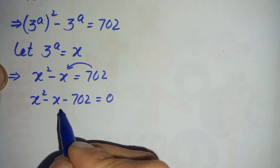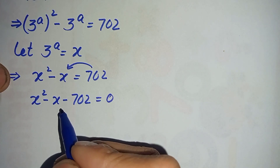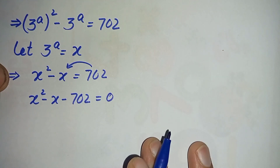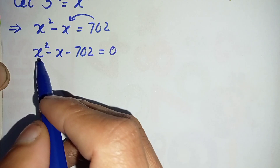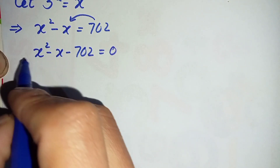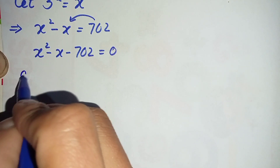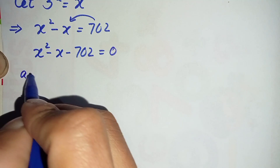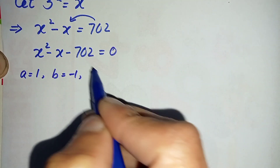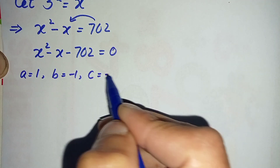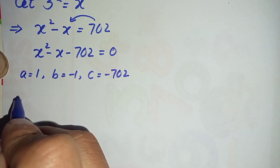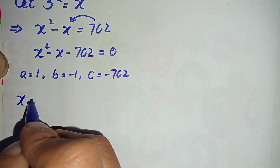So this is a quadratic equation. It cannot be solved using the factorization method, so here we will use the quadratic formula to find the roots. For the quadratic formula we need the values of a, b, and c. From here: the value of a is 1, the value of b is minus 1, and the value of c is minus 702.